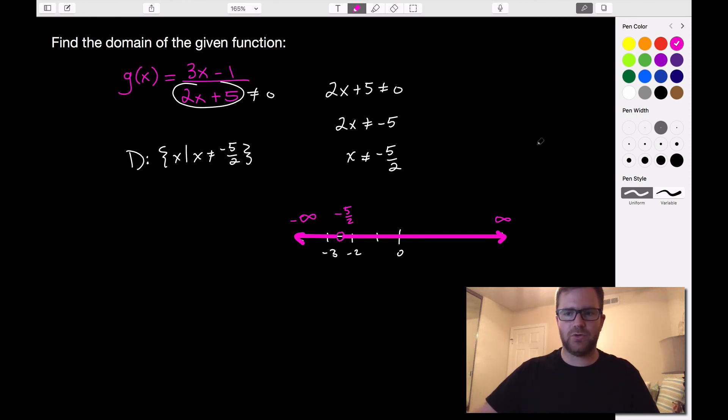So we have actually two intervals that we're looking at. We have this interval to the left and then this interval to the right. Now because we're not allowed to equal negative 5 halves, we use parentheses at negative 5 halves.